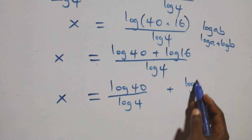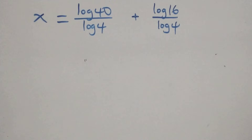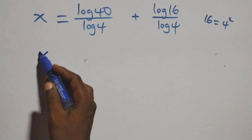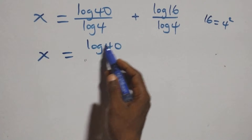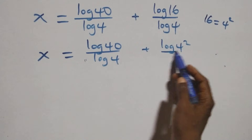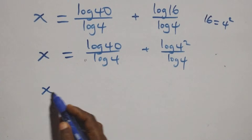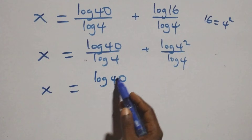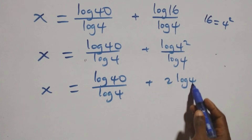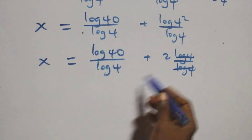We can write 16 as 4 times 4, which is 4 squared. So x equals log 40 over log 4 plus log(4 squared) over log 4. Applying the power rule of logarithms, the 2 comes out front, giving x equals log 40 over log 4 plus 2 log 4 over log 4. The log 4 terms cancel, leaving 2.